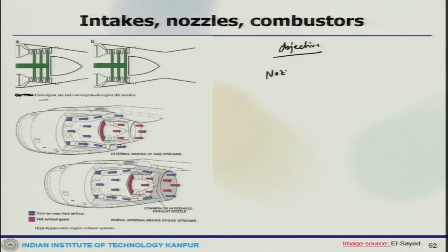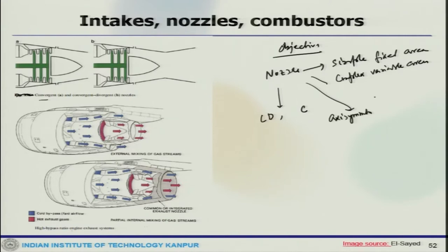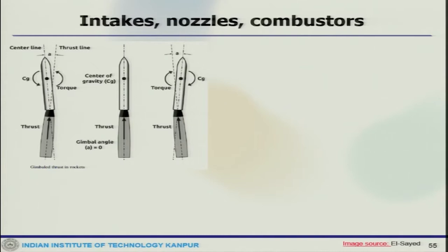Further functions include expanding high-pressure gas efficiently, providing required thrust in each flight phase with minimum installed drag, providing reverse thrust when needed, minimizing noise, minimizing infrared radiation, and providing vector force for vertical take-off and landing. Nozzles can be classified as simple fixed area or complex variable area, convergent or convergent-divergent, and axisymmetric or 2D. Rockets also have alternative nozzle options for different configurations, including thrust vector control by deflecting the nozzle.